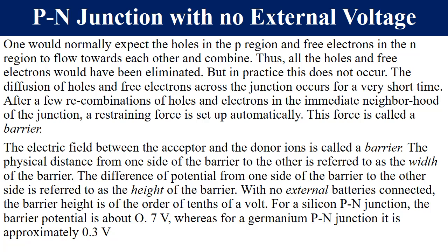What is an electric field? This is a force between the positive and the negative, and the direction of arrows representing the electric field is from positive to negative. The width of the depletion region is the physical distance from one side of the barrier to the other. The height is the difference of potential from one side of the barrier to the other. When no applied voltage is connected, the height of the barrier is of the order of a tenth of a volt — typical values are 0.7 V for silicon and 0.3 V for germanium.